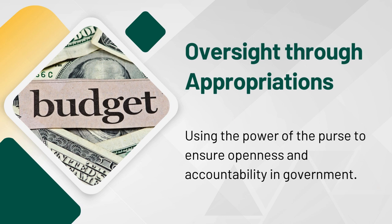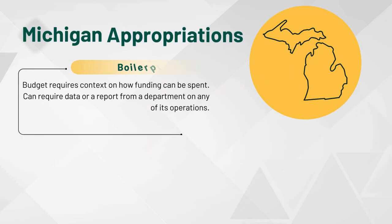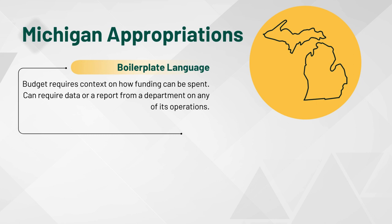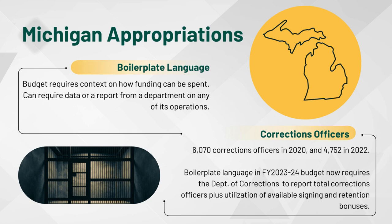Appropriations oversight is using the power of the purse to ensure openness and accountability in government. States use this power through several different approaches. In Michigan, boilerplate language is a section in the budget where further context is given on how funding can be spent. This language can also require data or a report from a department on any of their operations. According to the Michigan House Fiscal Agency, Michigan had 6,070 correction officers in 2020 and 4,752 in 2022. In response, the Department of Corrections will report as required by fiscal year 2023-24 budget boilerplate language on total corrections officers plus the utilization of available signing and retention bonuses.